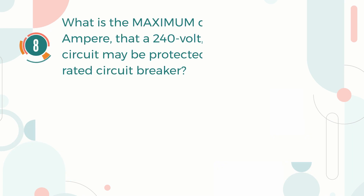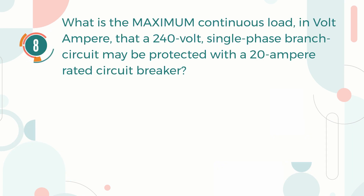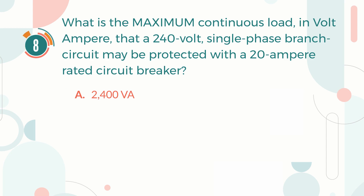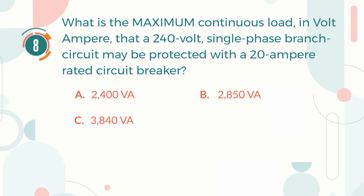Number 8. What is the maximum continuous load in volt-amperes that a 240 volt single phase branch circuit may be protected with a 20 ampere rated circuit breaker? A. 2,400 volt-amperes. B. 2,850 volt-amperes. C. 3,840 volt-amperes. D. 4,800 volt-amperes.